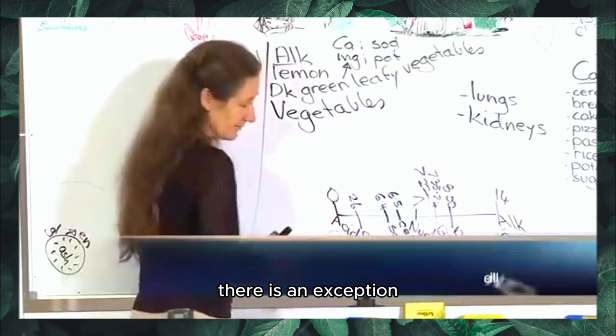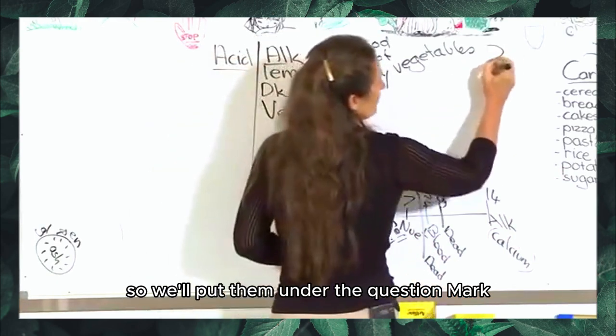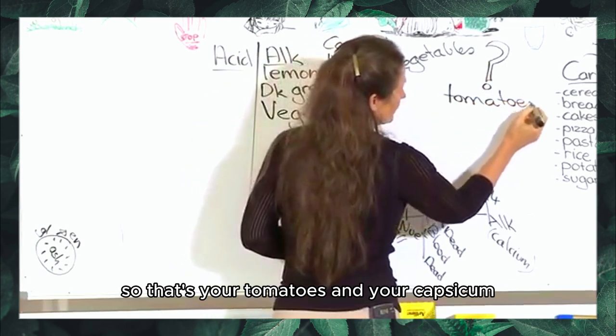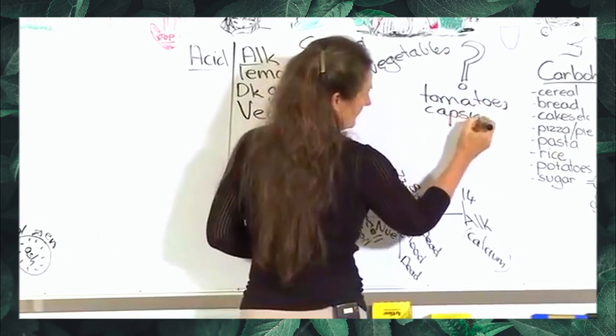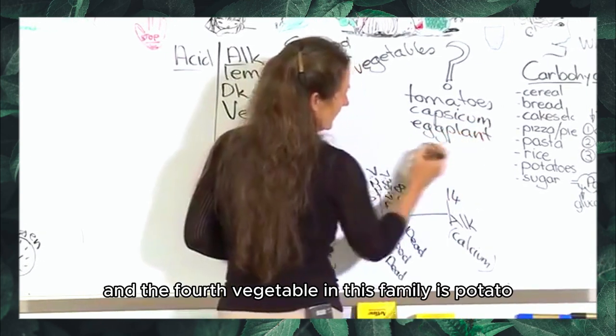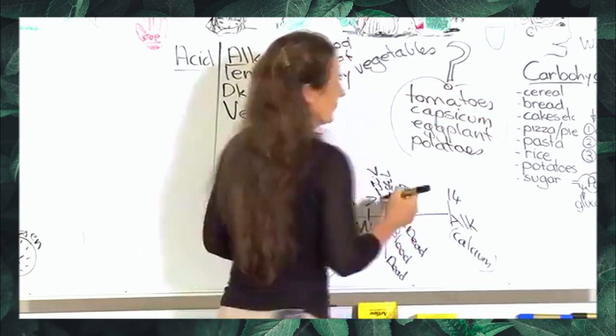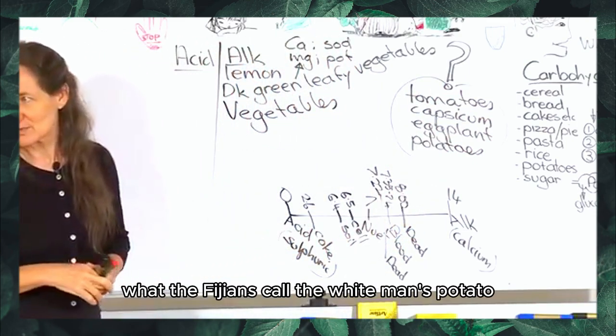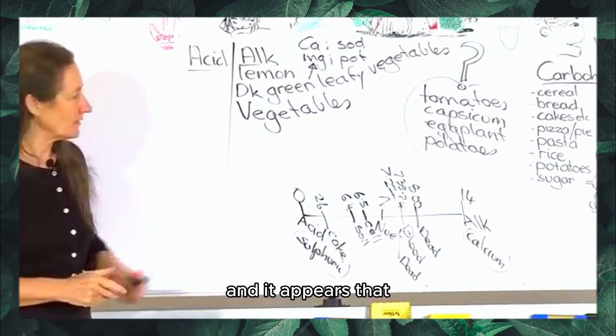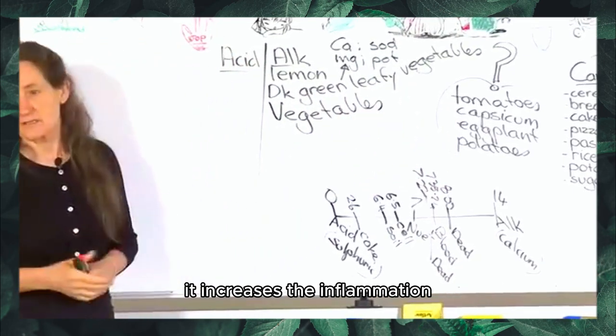All vegetables have an alkaline effect. For some people though there is an exception and this is the nightshade group of vegetables. For some people the nightshade group of vegetables have an acid effect. So that's your tomatoes, capsicum, eggplant, and the fourth vegetable in this family is potato - the Irish potato.